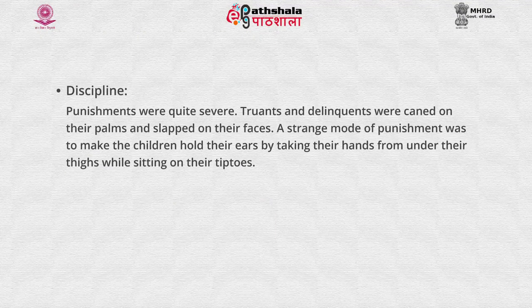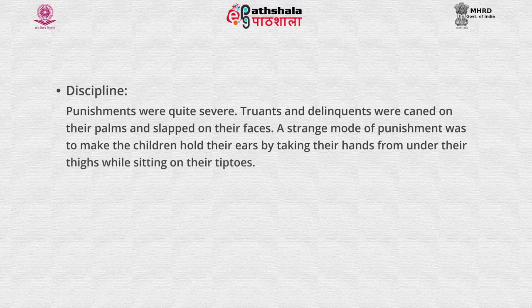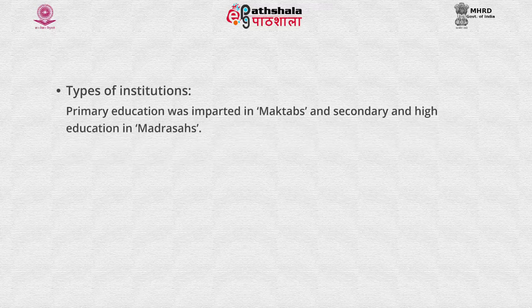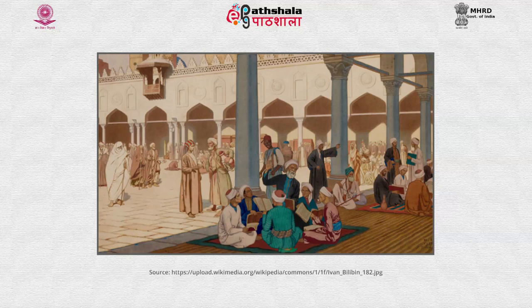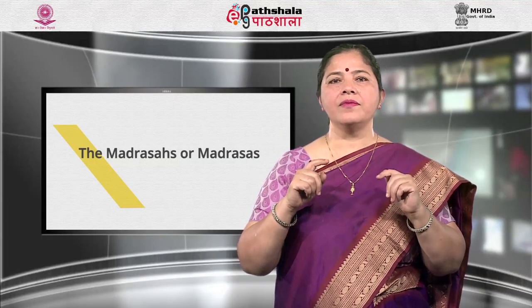Regarding discipline, punishments were quite severe. Truants and delinquents were caned on their palms and slapped on their faces. A strange mode of punishment was to make children hold their ears by taking their hands from under their thighs while sitting on their tiptoes. Regarding forms of education, there were different types of institutions: primary education was imparted in maktabs, and secondary and higher education in madrasas. Provision was also made for vocational, technical, and professional education. Madrasas were associated with literature, logic, history, geography, astronomy, astrology, arithmetic, agriculture, and medicine.